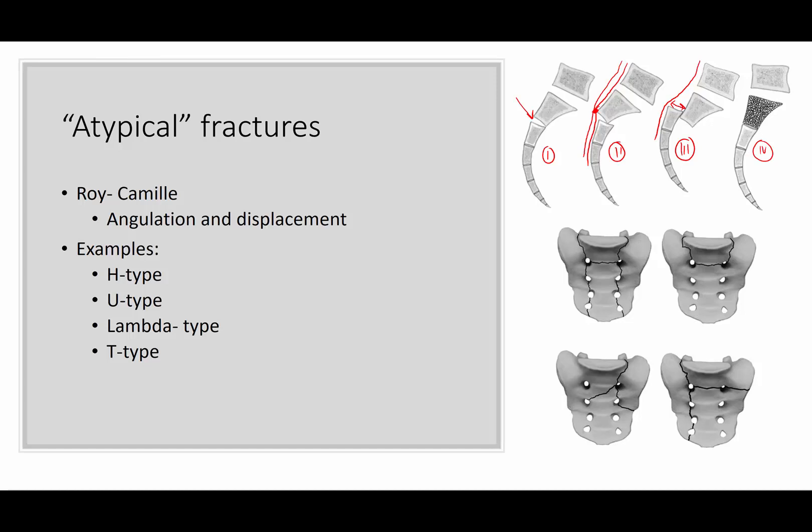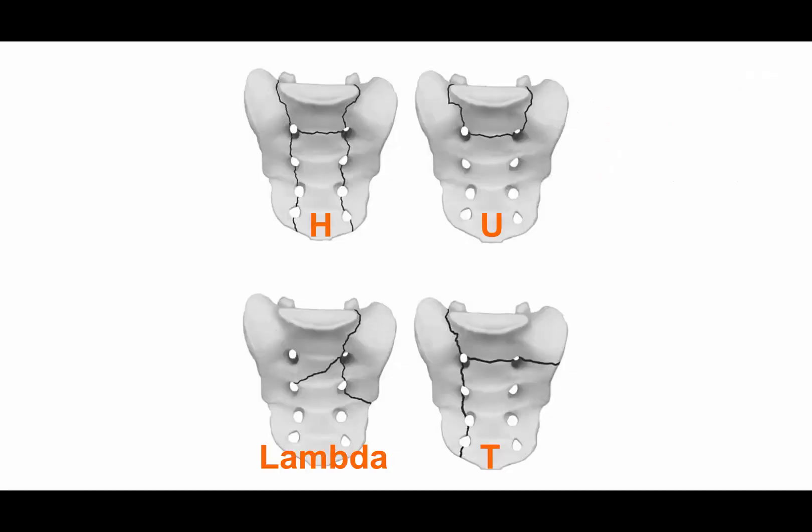The type four is essentially a crush injury — that's one body. Here again are the morphologic descriptions: H-type, U-type, lambda-type, T-type. These are all somewhat uncommon, and you need to really know what you're looking for to pick up on these. The lambda and T types are fairly uncommon; the U-type, and sometimes the H-type, is a little bit more common in my experience.